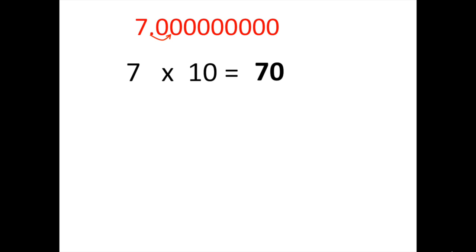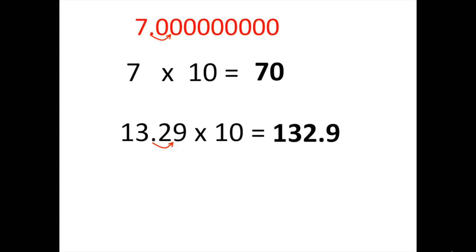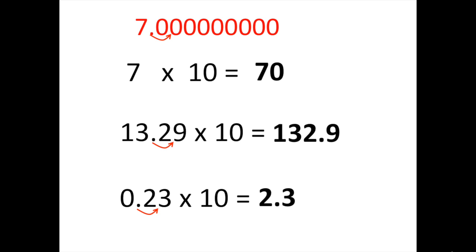Let's look at a decimal times 10. 13 and 29 hundredths times 10: we want this number to be 10 times larger, so we move the decimal place one place value to the right. 13 and 29 hundredths times 10 equals 132 and 9 tenths, which is 10 times larger. Now one last one: 23 hundredths times 10. We move the decimal point one place to the right so each digit moves up one place value, making 23 hundredths 10 times bigger. The answer is 2 and 3 tenths.